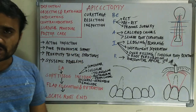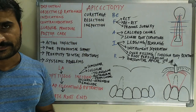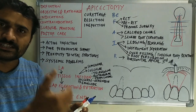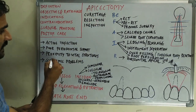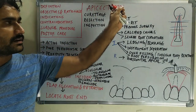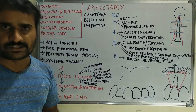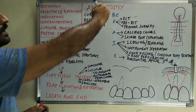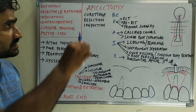Contraindications: active infection with active periradicular bone destruction; poor periodontal support with extreme bone loss and grade 2 or 3 mobility, in which case extraction is preferred; proximity to vital structures, especially the inferior alveolar nerve in the mandible; and systemic problems like bleeding disorders such as hemophilia, immunocompromised status from HIV, or heart problems. There are only four contraindications for apicectomy.